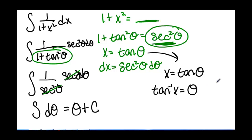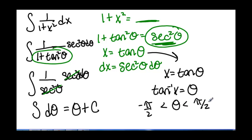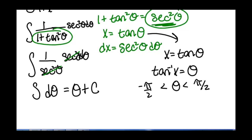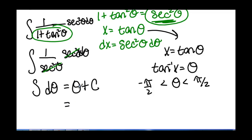Remember that our inverse tangent is restricted, and theta goes from negative pi over 2 to pi over 2. So our final answer is that the integral equals the inverse tangent of x plus a constant c.